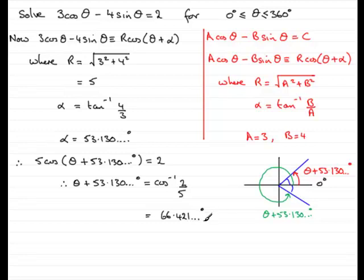Do that on your calculator. What do you get? Well you find that you get 293.578 and so on degrees. All right. All I need to do now is just subtract 53.130 degrees from each of these angles and that will give me theta. So therefore theta would equal and if we do that subtraction you get 13.291 and so on degrees and take away from this angle you get 240.448 and so on degrees.